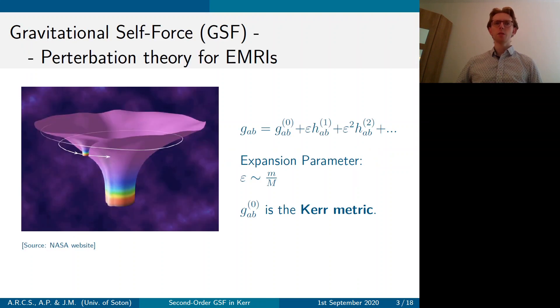So what is gravitational self-force? Basically you can think of it as perturbation theory for EMRIs. In this diagram, it depicts the spacetime where a supermassive black hole causes the curvature, but also there is a compact object orbiting the supermassive black hole. And due to the self-force, this orbit slowly evolves closer and closer towards the supermassive black hole until the compact object eventually plunges into the supermassive black hole horizon.